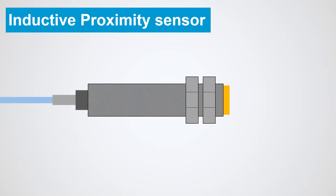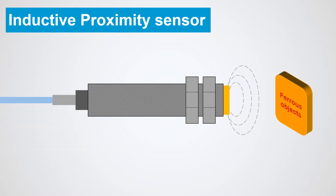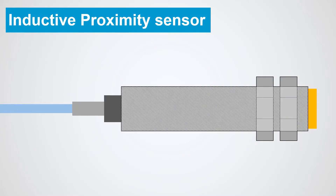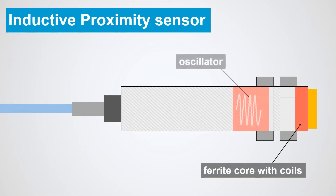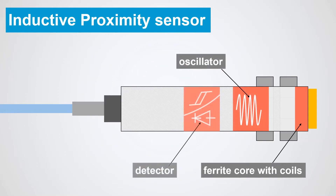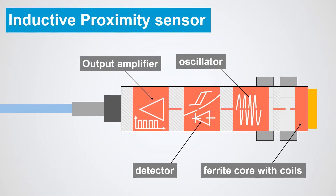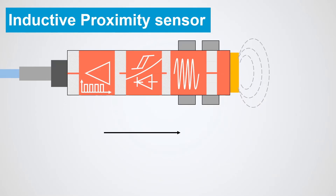An inductive proximity sensor is a non-contact proximity sensor that can detect ferrous objects that contain iron, ideally mild steel thicker than one millimeter. It consists of four major components: a ferrite core with coils, an oscillator, a detector or signal conditioner, and an output amplifier, all packed in a compact housing.